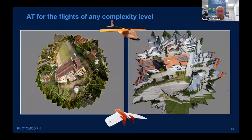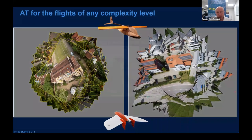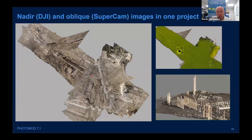Some more samples of new features: flights of any complexity level. Many flights from UAVs have very complicated geometry with big angles of pitch and roll, so it's not easy for algorithms to find tie points, and we continue making improvements in this area.